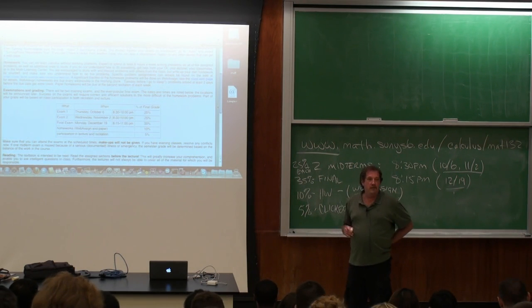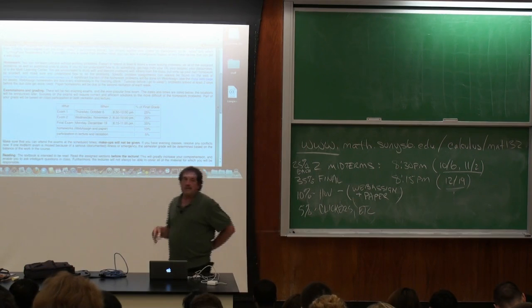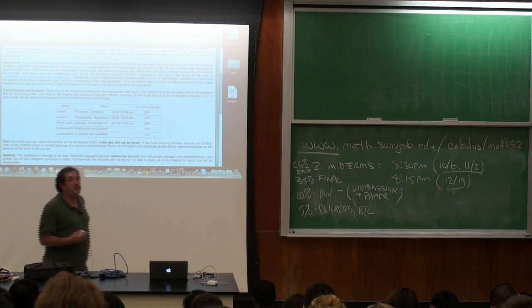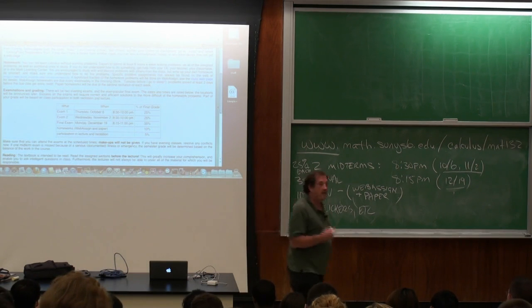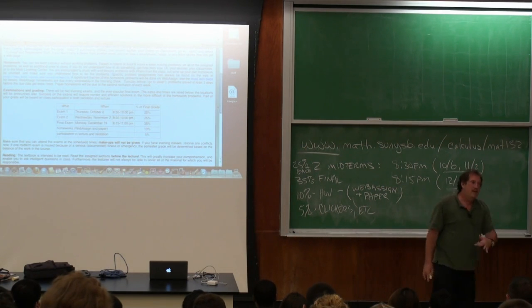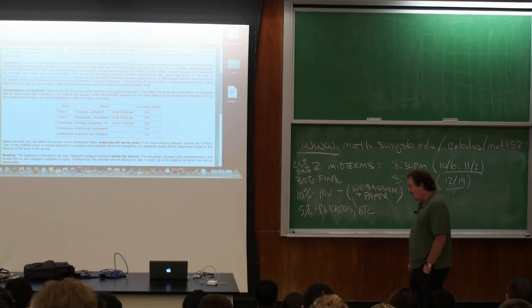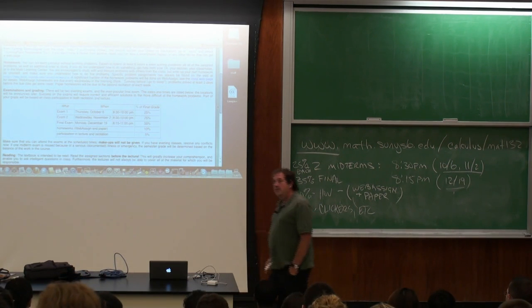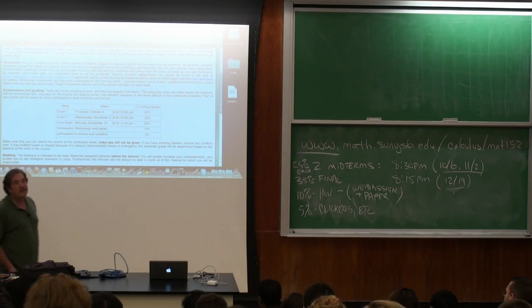The problems are graded perhaps in a funny way. You type in the answer, it says right or wrong. If it says wrong, you get to type in another answer. However, if you get it wrong, if you get it right the first time, you get one point for that problem. If you get it wrong the first time, but get it right the second time, you get half a point. If you get it right the third time, you get one third of a point. If you get it right the tenth time, you get one tenth of a point. So there is a diminishing amount of credit awarded.